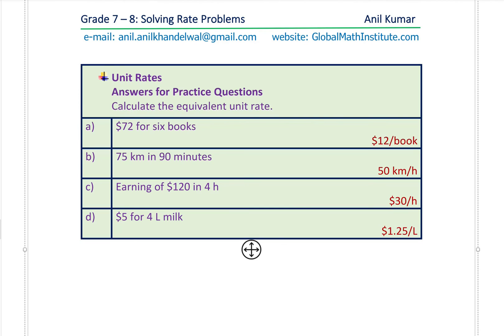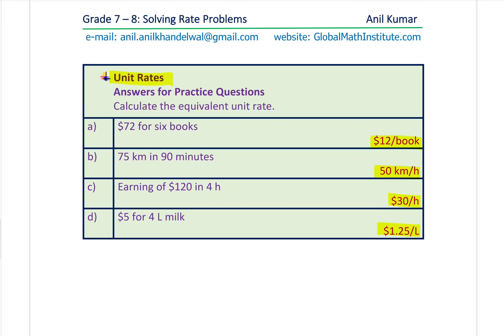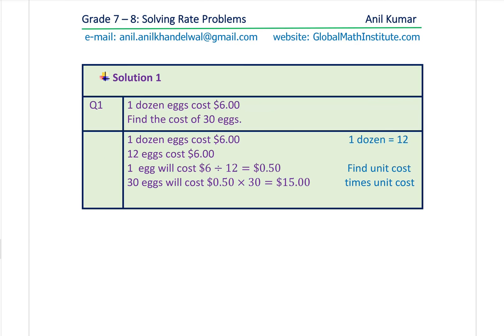Here are the solutions. For finding unit rates: the answers are provided for you to check. For the test questions — 12 eggs cost $6, so 1 egg is 6 divided by 12, which is 50 cents. 30 eggs will be 50 cents times 30, which is $15. Three cars have 12 wheels — one car has 12 divided by 3 = 4 wheels. Seven cars will have 7 times 4 = 28 wheels.